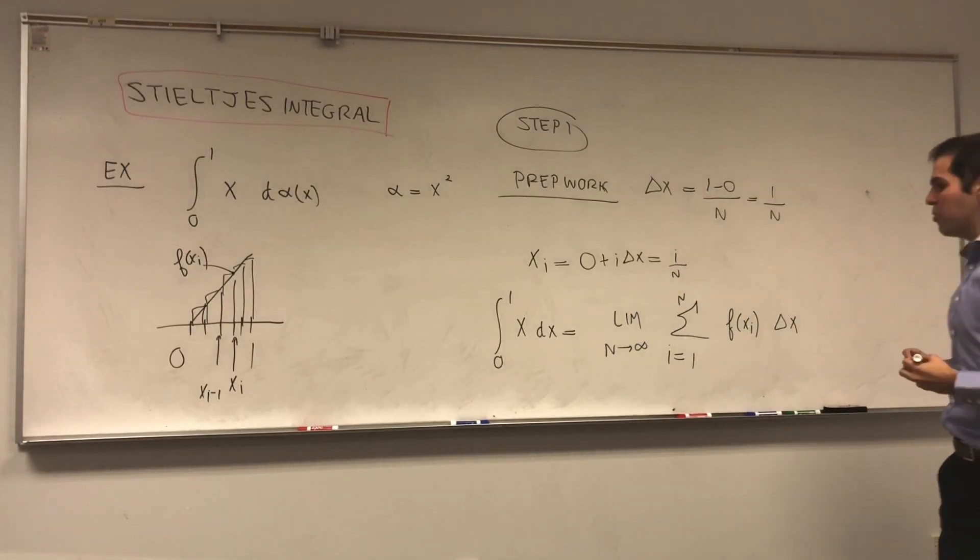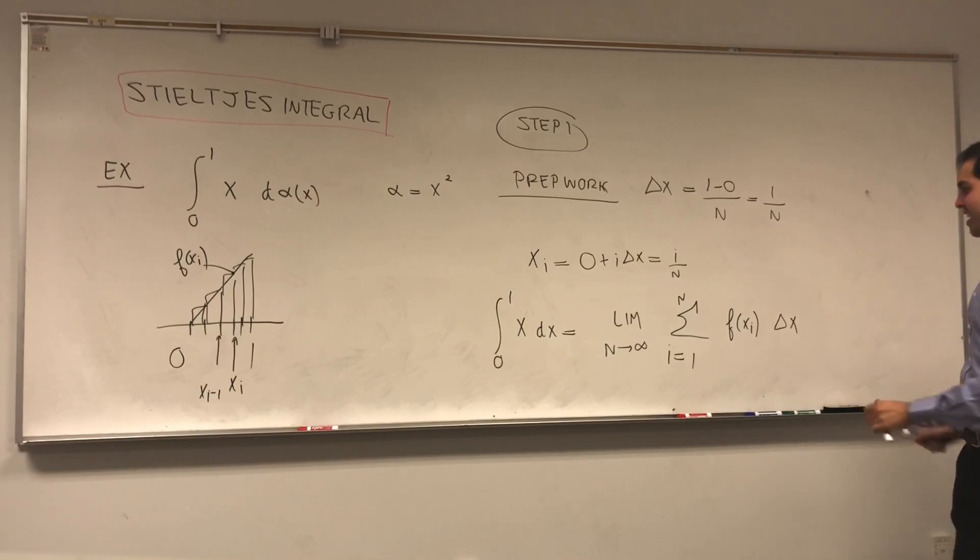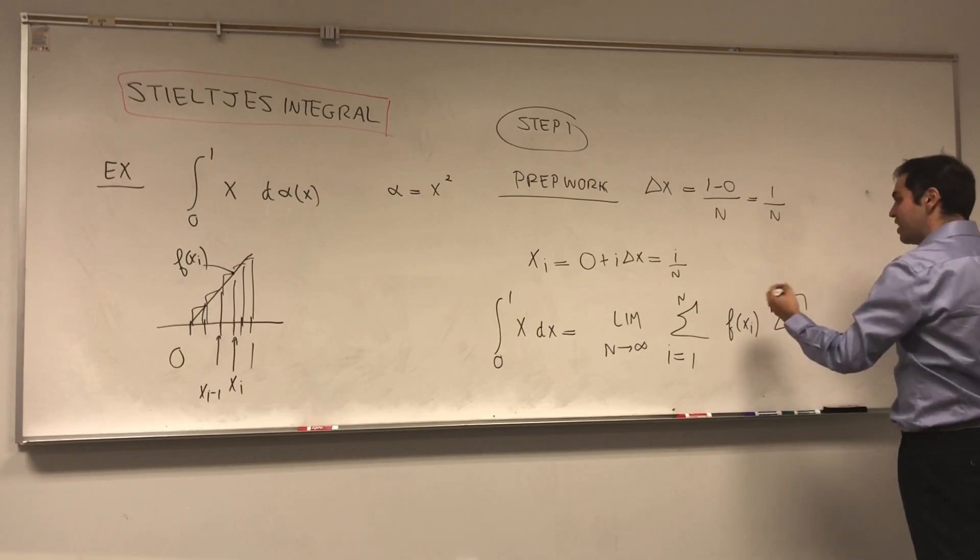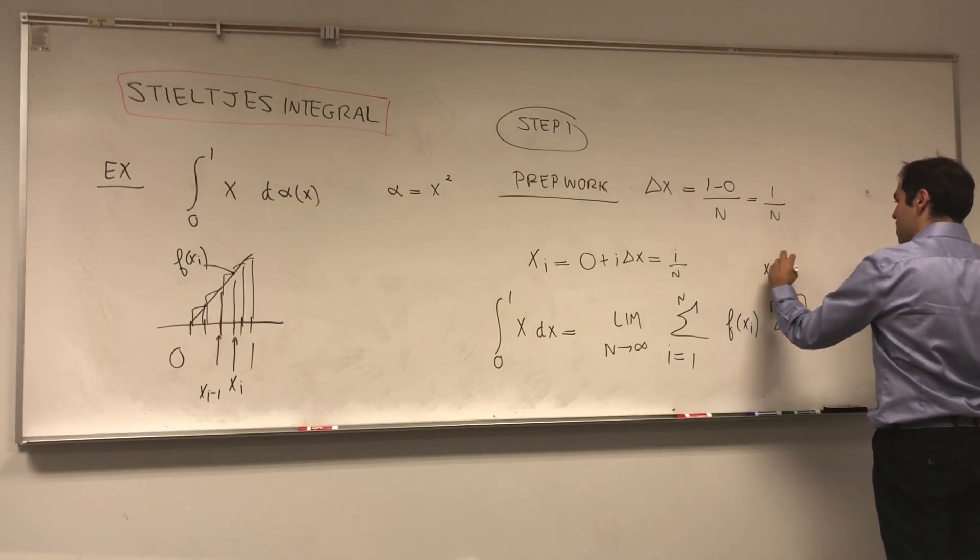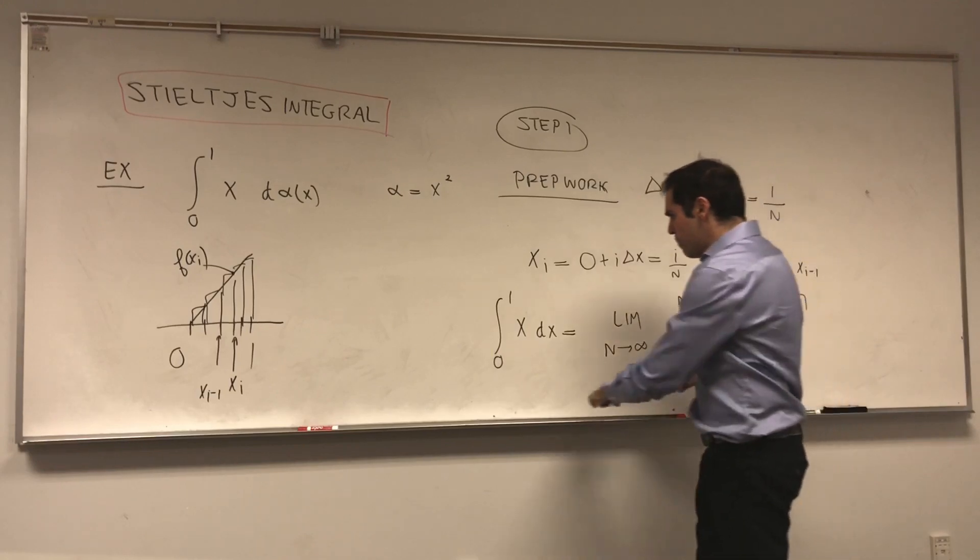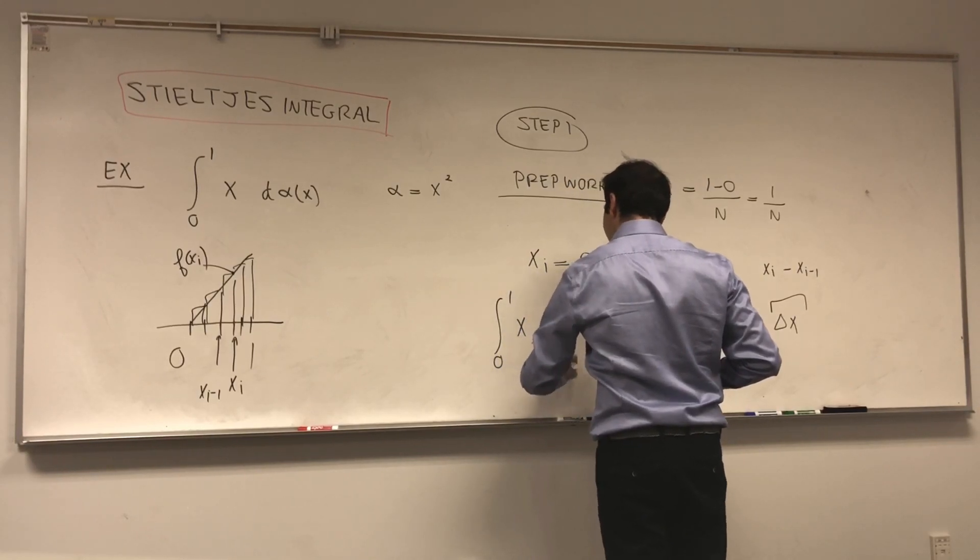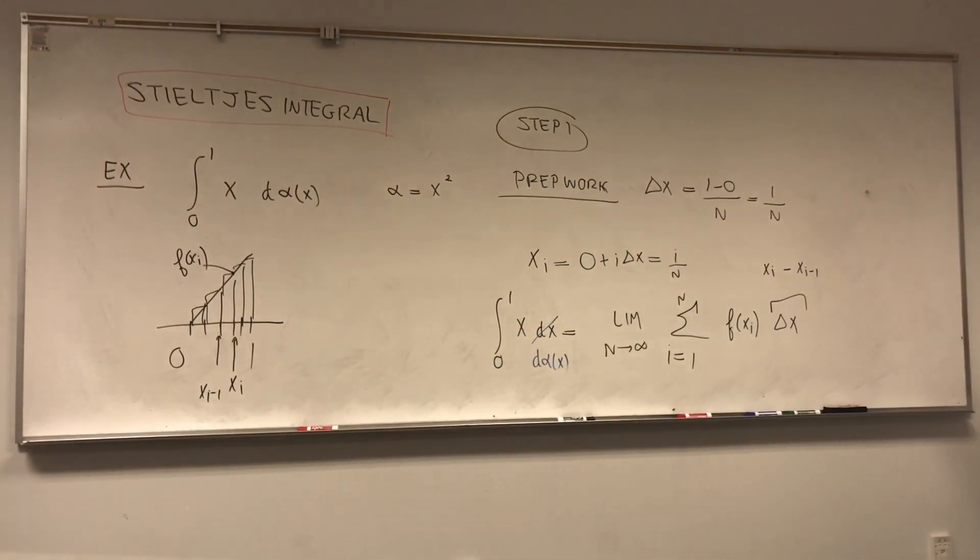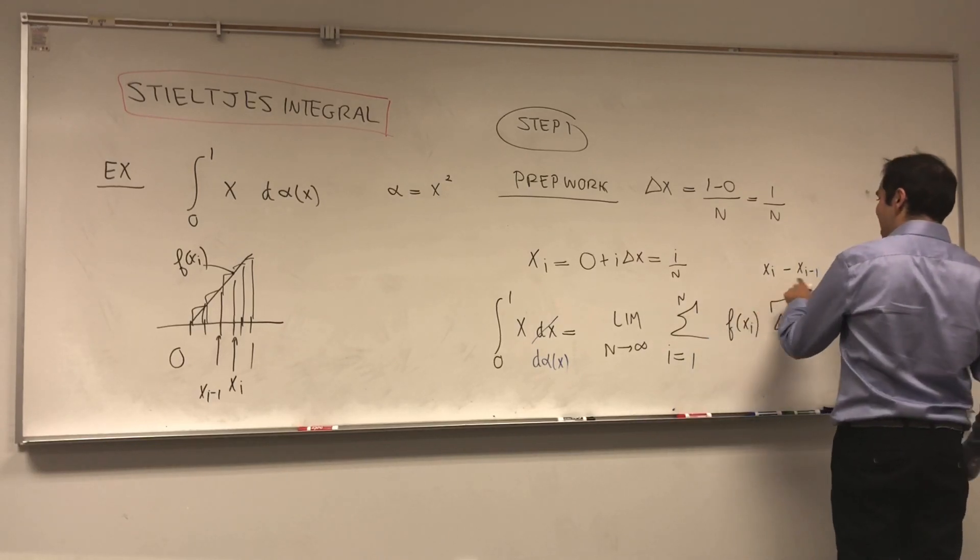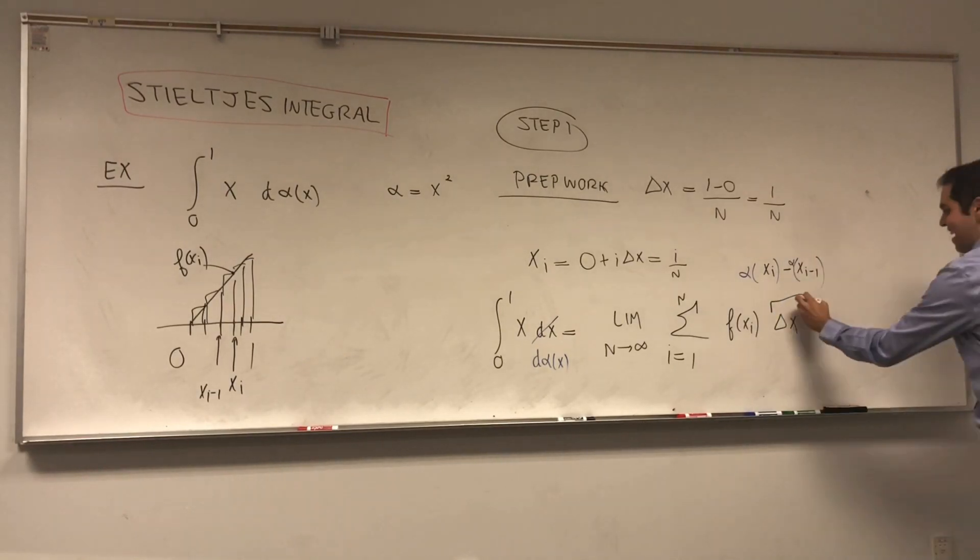Here comes the cool thing about Stieltjes integrals. It's almost the same definition, except the f of x_i is still the same. The delta x, notice, you can indeed write this as, you know, x_i minus x_{i-1}. But here, because you're scaling your x in some weird way, instead of writing, first of all, instead of writing dx, you write d alpha x. And the only difference is, you're like scaling again your x in a different way. So instead of writing x_i minus x_{i-1}, you write alpha of x_i minus alpha of x_{i-1}.